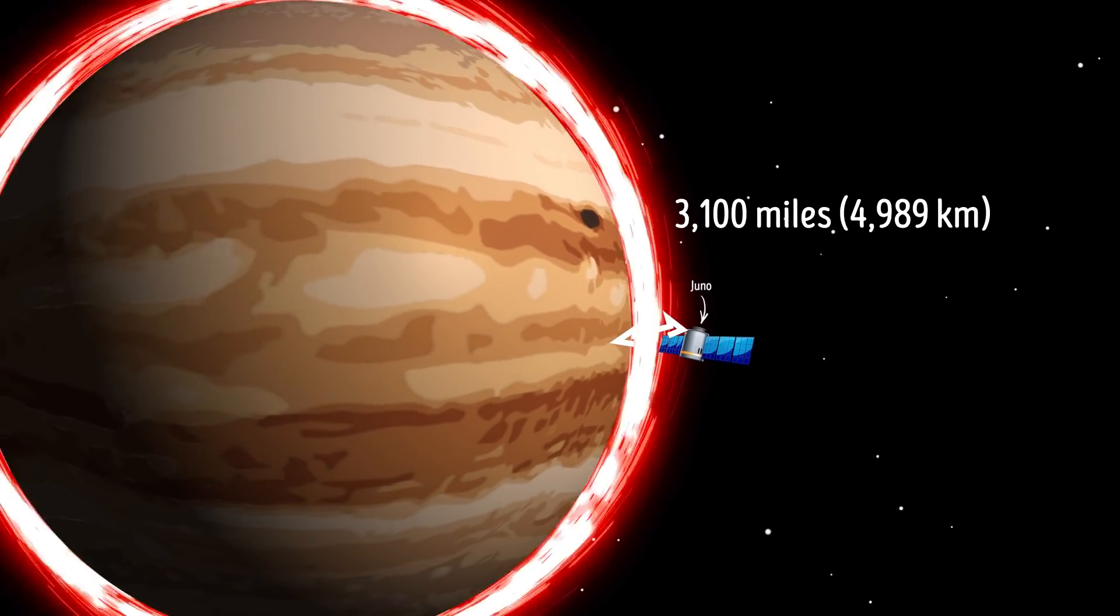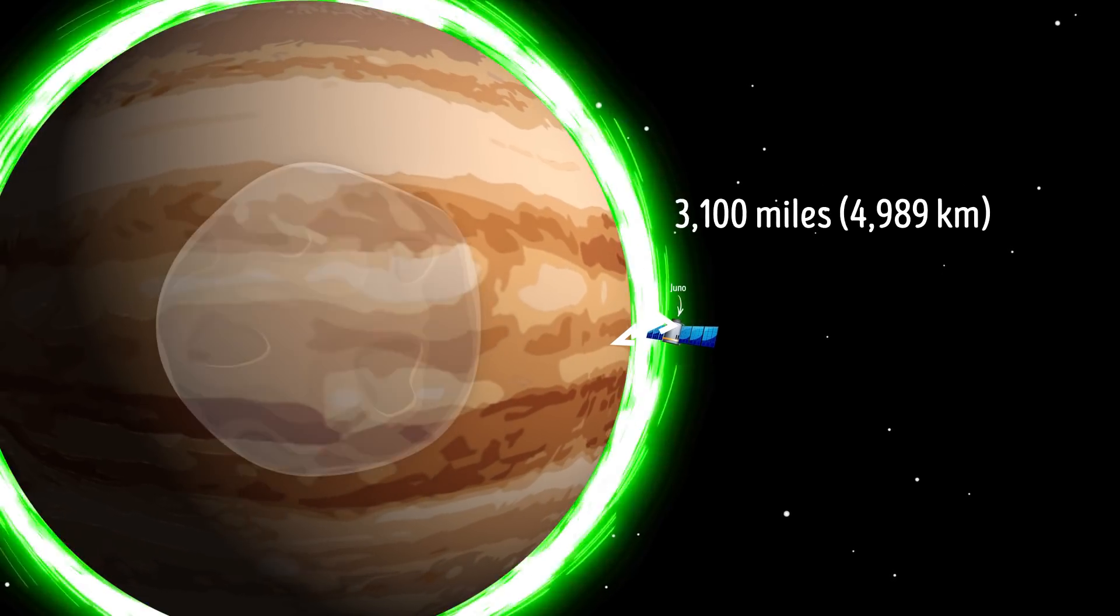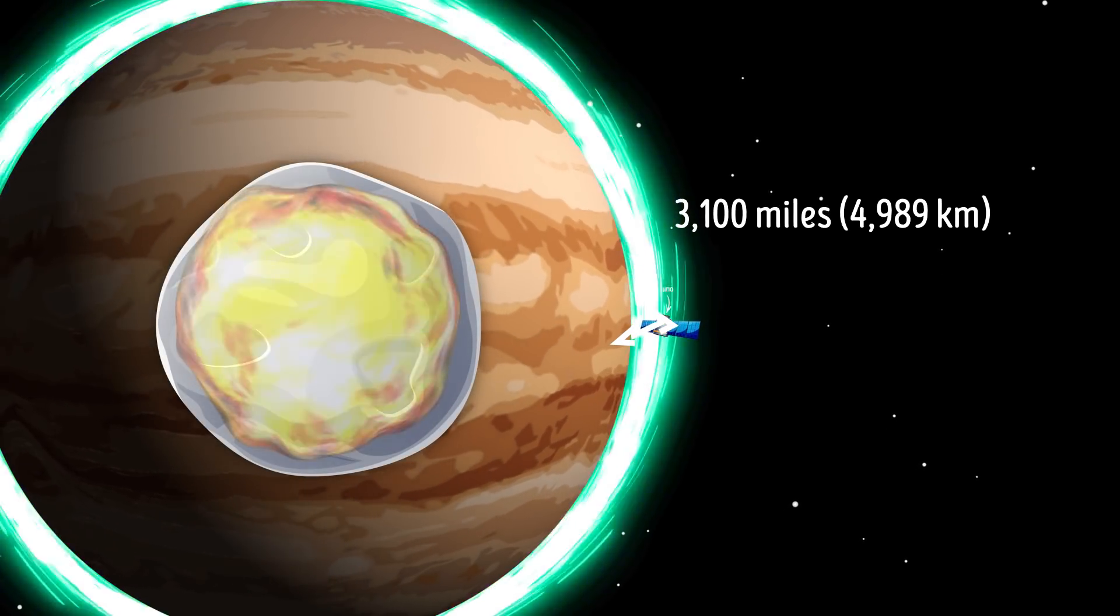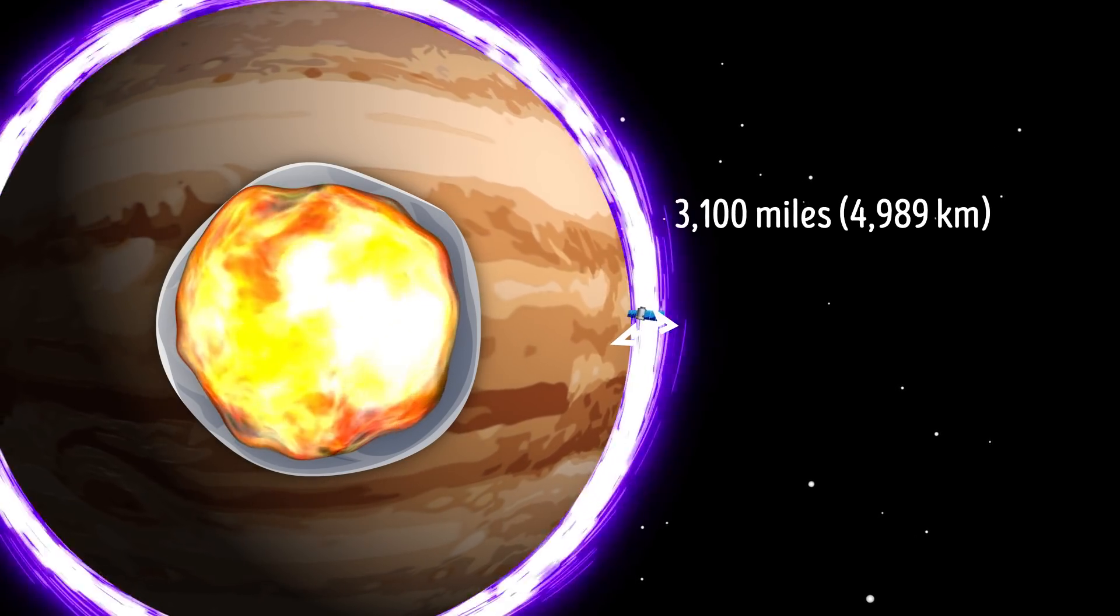What does Jupiter really hide beneath its layers and layers of atmosphere? A solid planetary core, or a bowl of hot space soup?